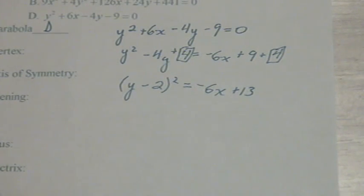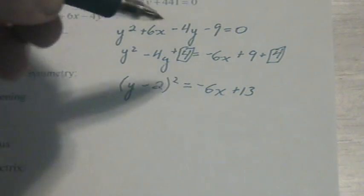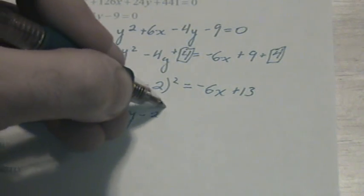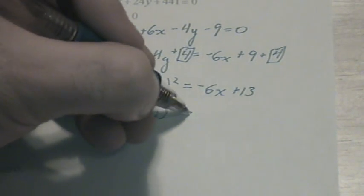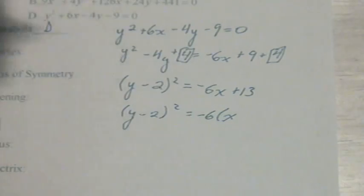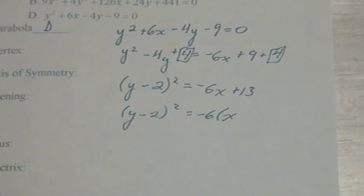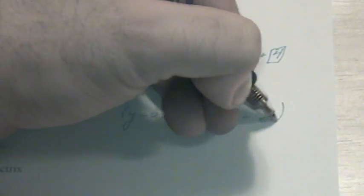The only thing left to do is on the right hand side where we need to convert this into standard form. y minus 2 squared equals negative 6 times x. Now we're factoring out that negative 6, so we have to divide the 13 by negative 6. Positive divided by negative is negative 13 over 6.